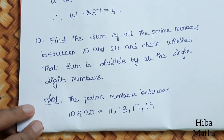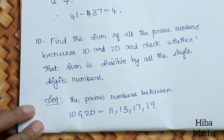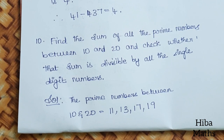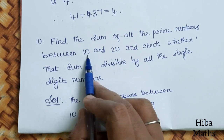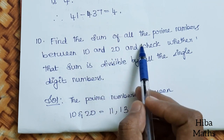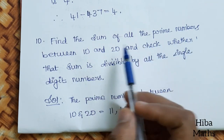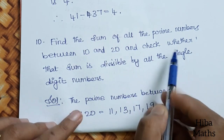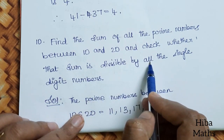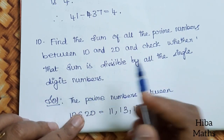Hello students, welcome to Hibamax. 6th standard math, letter 2, question 10: find the sum of all the prime numbers between 10 and 20. We will add all the prime numbers and check whether that sum is divisible by all the single digit numbers.